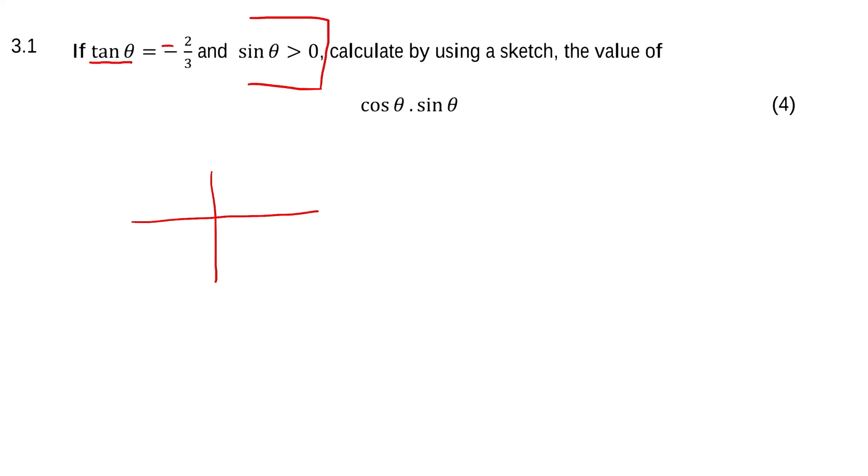They're saying that tan is something negative. We know from the CAST diagram that tan is positive in two quadrants, so tan will be negative in the other two quadrants.